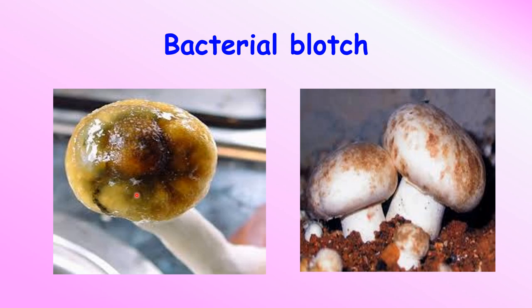The bacterial blotch becomes rotten, and the infected tissues of the mushroom — by leaking from the mushroom gill part — spread and affect the whole mushroom crop.